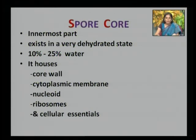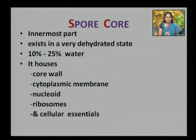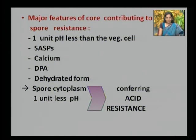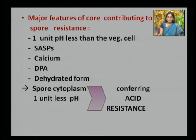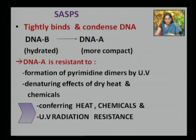The innermost part of the spore, the spore core, also called a protoplast, exists in a very dehydrated condition. It consists of 10 to 25% of the water of the vegetative cell and houses the core wall, cytoplasmic membrane, nucleoid, ribosomes, and low energy molecules. Key features contributing to spore resistance include the spore cytoplasm being one pH unit lower than the vegetative cell, small acid-soluble proteins (SASPs), calcium, dipicolinic acid, and low water content. The lower pH confers acid survival to the spore.